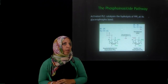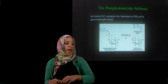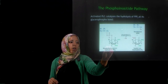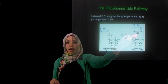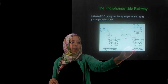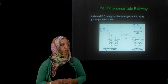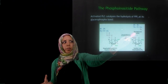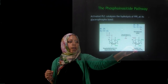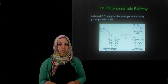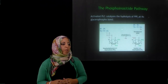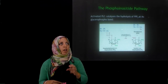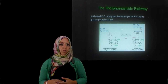Phospholipase C is the enzyme that catalyzes the hydrolysis of phosphatidylinositol 4,5-bisphosphate (PIP2) into diacylglycerol (DAG) and inositol 1,4,5-triphosphate (IP3). DAG helps anchor protein kinase C to the membrane, thereby activating it, whereas IP3 binds to a calcium channel within the ER, releasing calcium into the cytosol, which can bind to calmodulin and activate a number of different kinases.